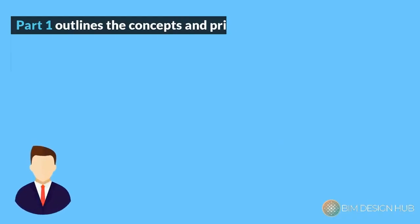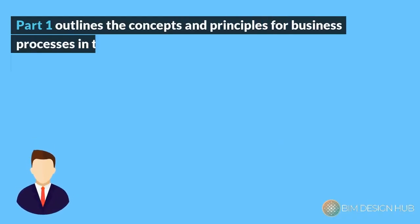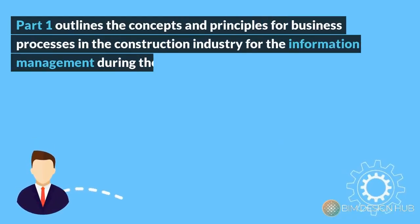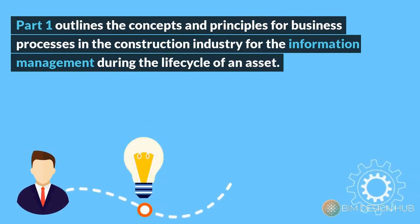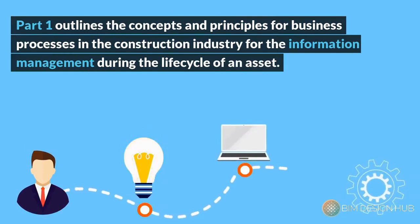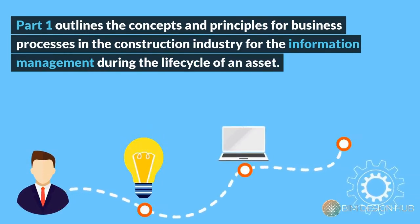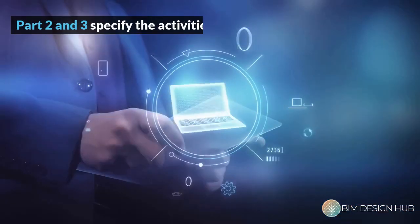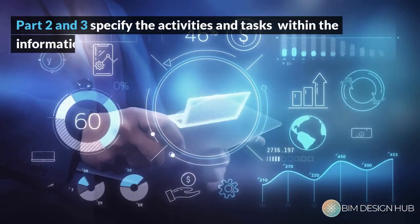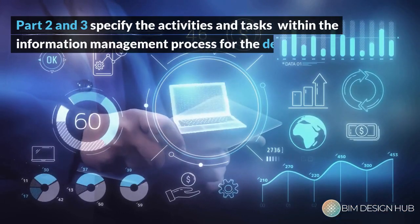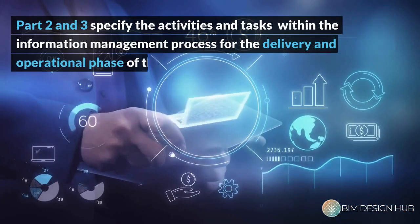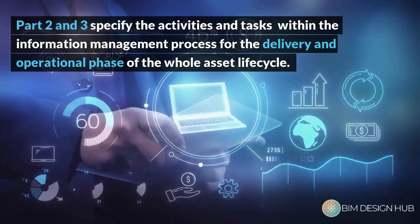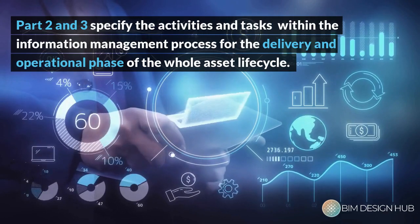Part 1 outlines the concepts and principles for business processes in the construction industry for information management during the lifecycle of an asset. Part 2 and 3 specify the activities and tasks within the information management process for the delivery and operational phase of the whole asset lifecycle.